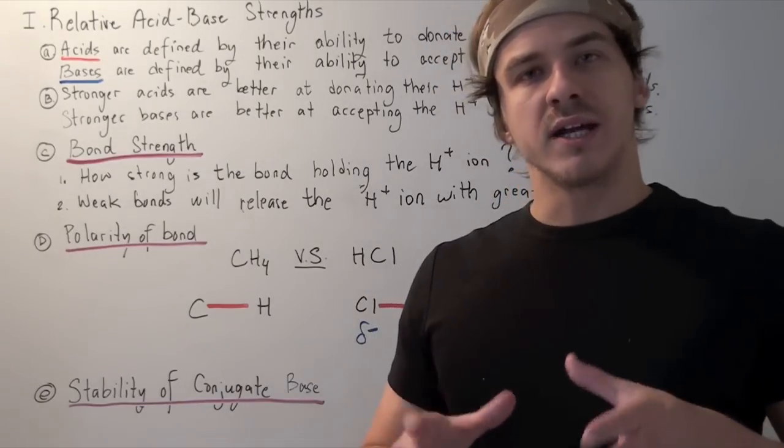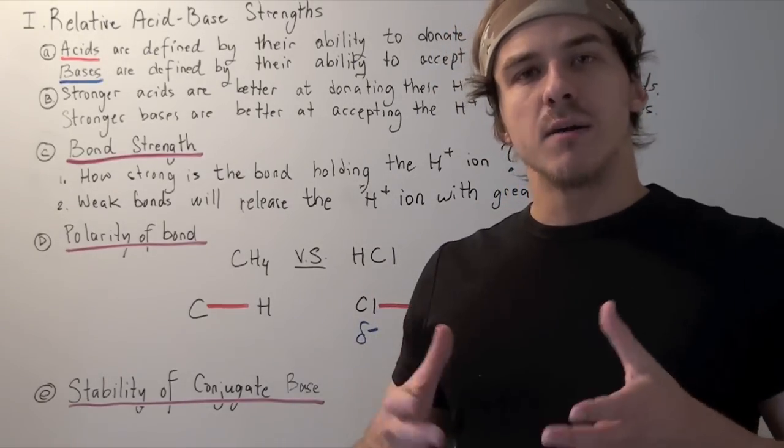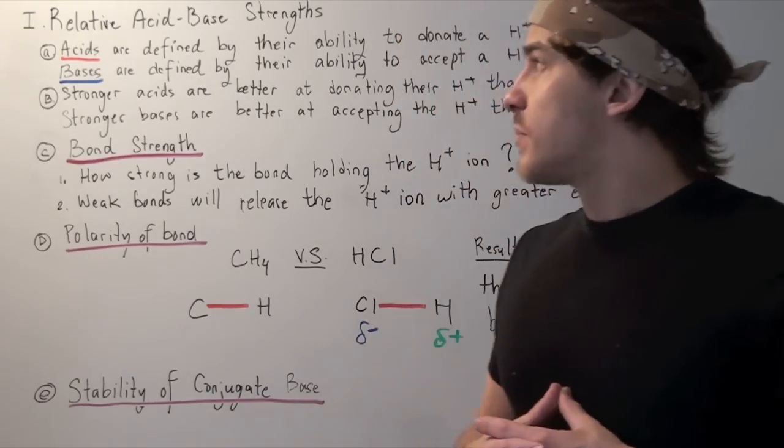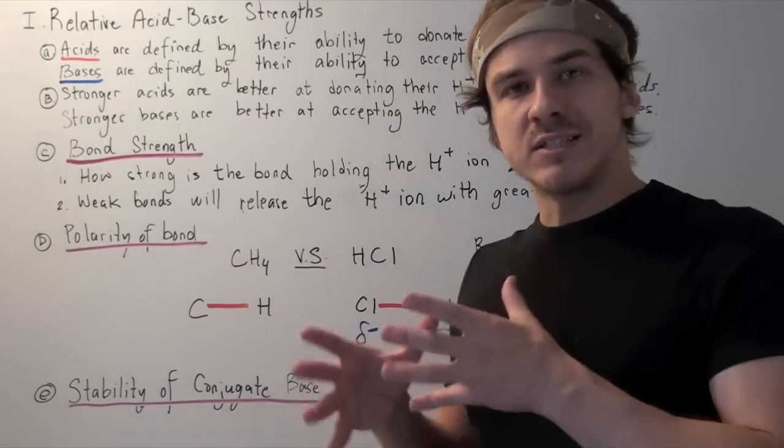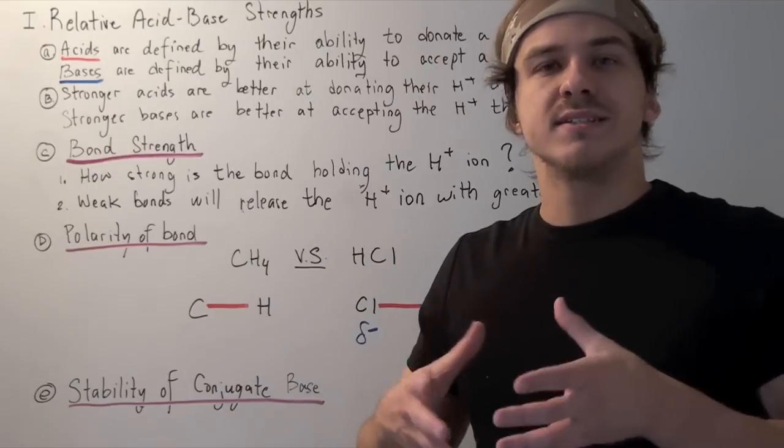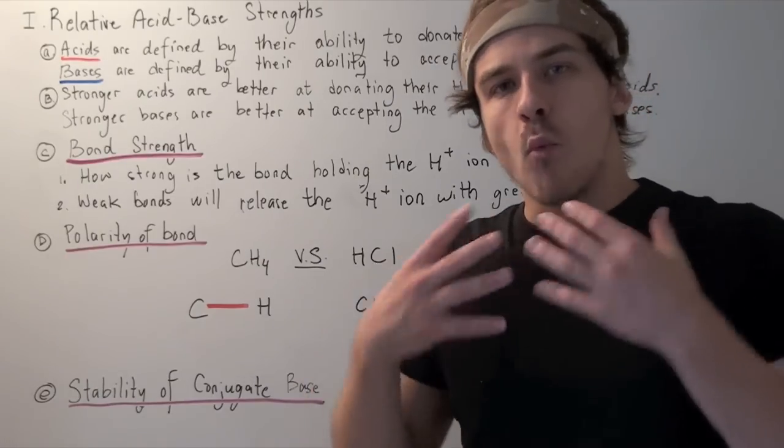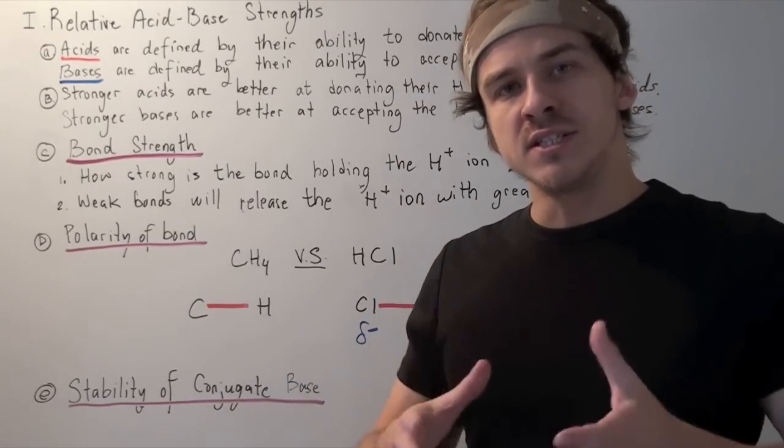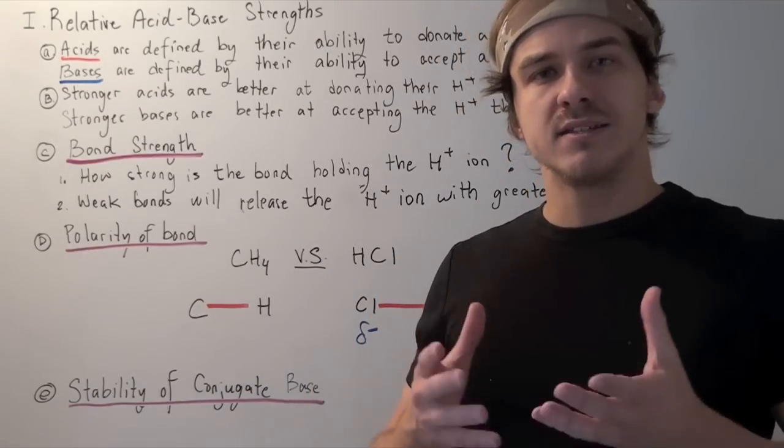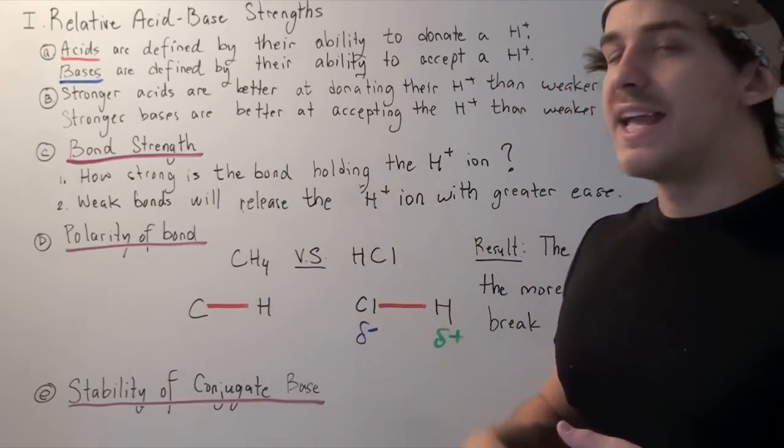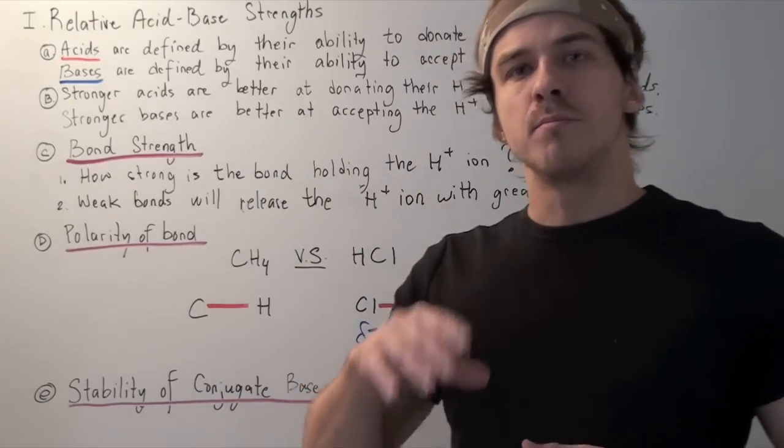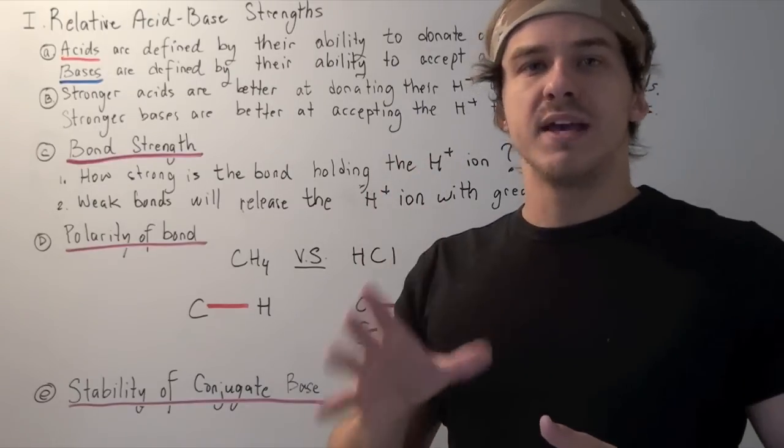In this lecture, we're going to look at the different things that make up a good acid. Before we talk about acids and bases, we must define what acids and bases are. If you want to learn more about the various types of definitions that exist between acids and bases, check out the link below. In this lecture, we're going to focus on the Bronsted Lowry acid-base concept.